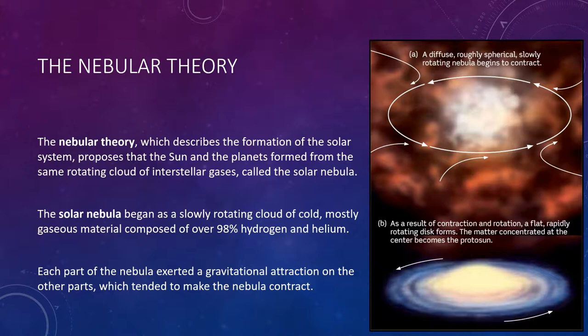The nebular theory begins with the idea that our solar system was born from the gravitational collapse of an interstellar cloud of gas called the solar nebula, that collapsed under its own gravity. The solar nebula probably began as a large, roughly spherical cloud of very cold and very low-density gas.